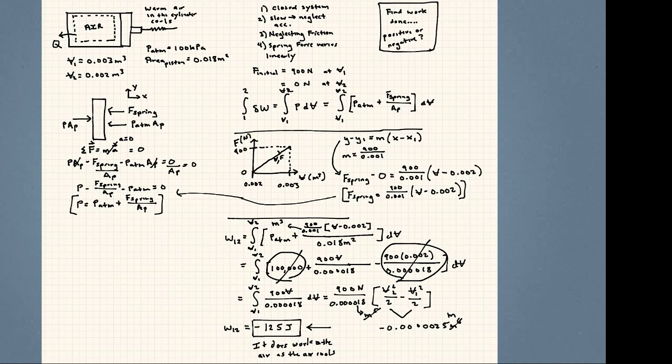So our work from one to two carrying out this calculation is going to be negative 125 joules. So what does negative mean? Negative means it does work on the air.